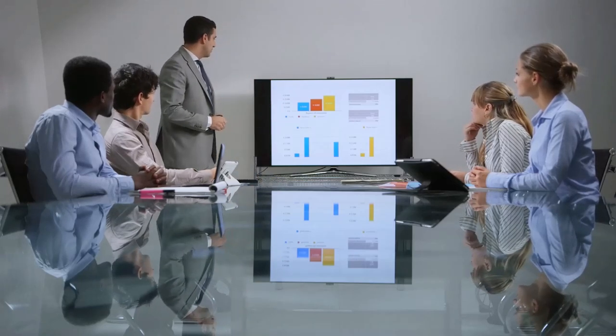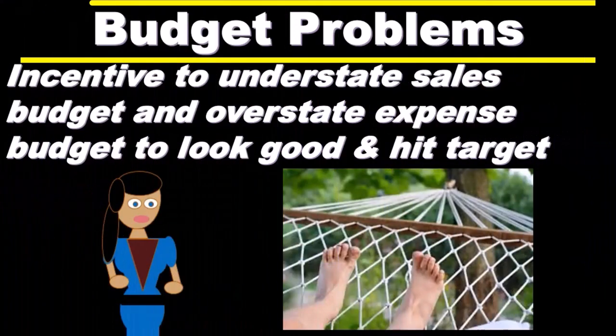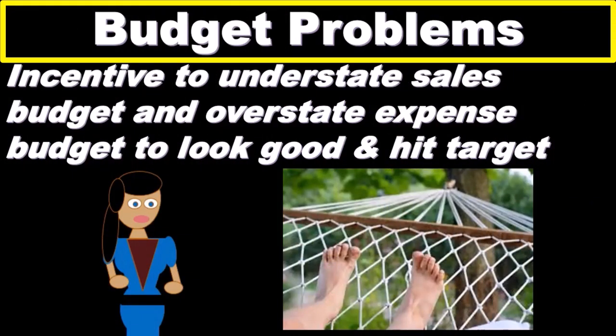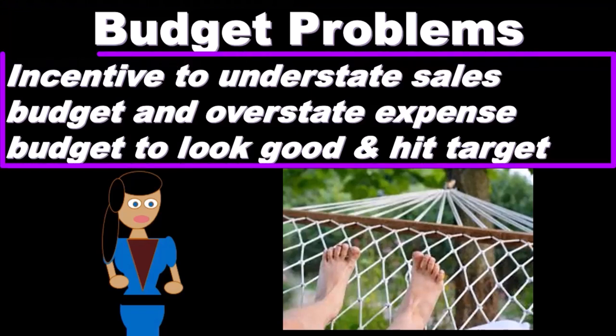One problem with the budget is that there is an inherent incentive within the budgeting process to try to understate the sales that will be budgeted for and overstate the expenses. Why? Because that will make it easier to hit the target.